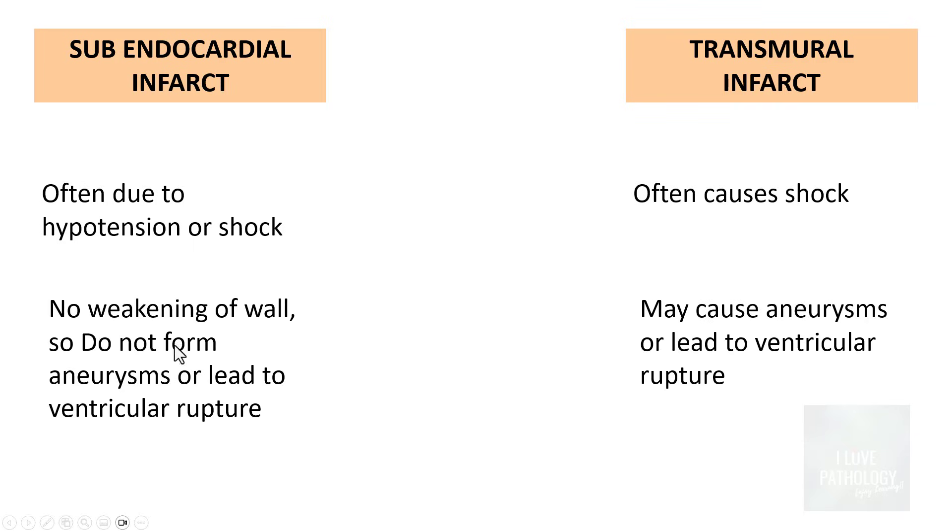There is no weakening of the wall in the case of subendocardial infarct, and then they do not form aneurysms or they do not lead to ventricular rupture, whereas in transmural infarct it can result in aneurysms or tend to ventricular rupture.